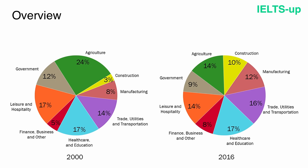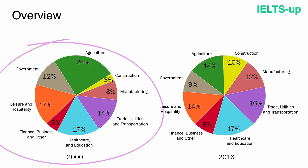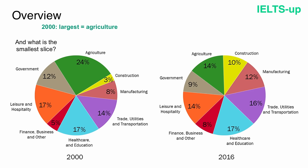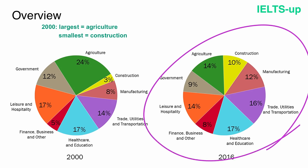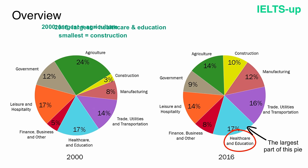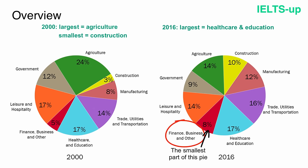Let's look at each pie chart and find the key features. Our first pie chart depicts year 2000. The largest slice is clearly agriculture, meaning agriculture was the biggest part of Turkey's economy in 2000. The smallest slice is construction at only 3%. Our second pie chart shows year 2016. The largest part is healthcare and education, and the smallest part is finance, business and other services.